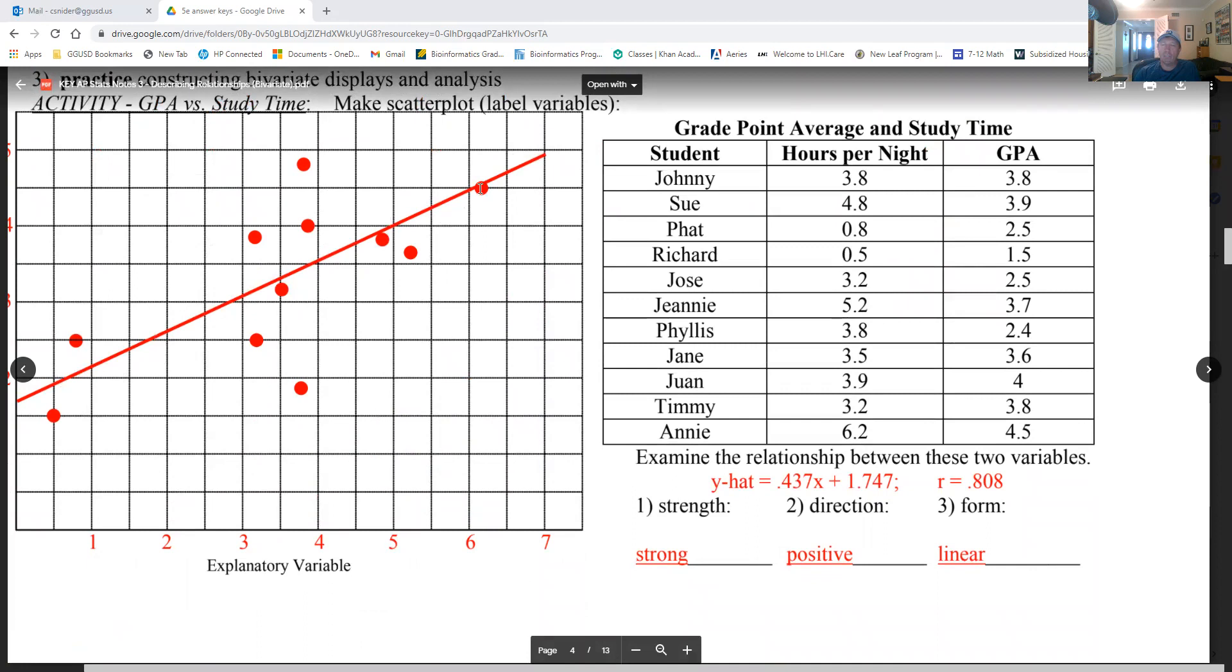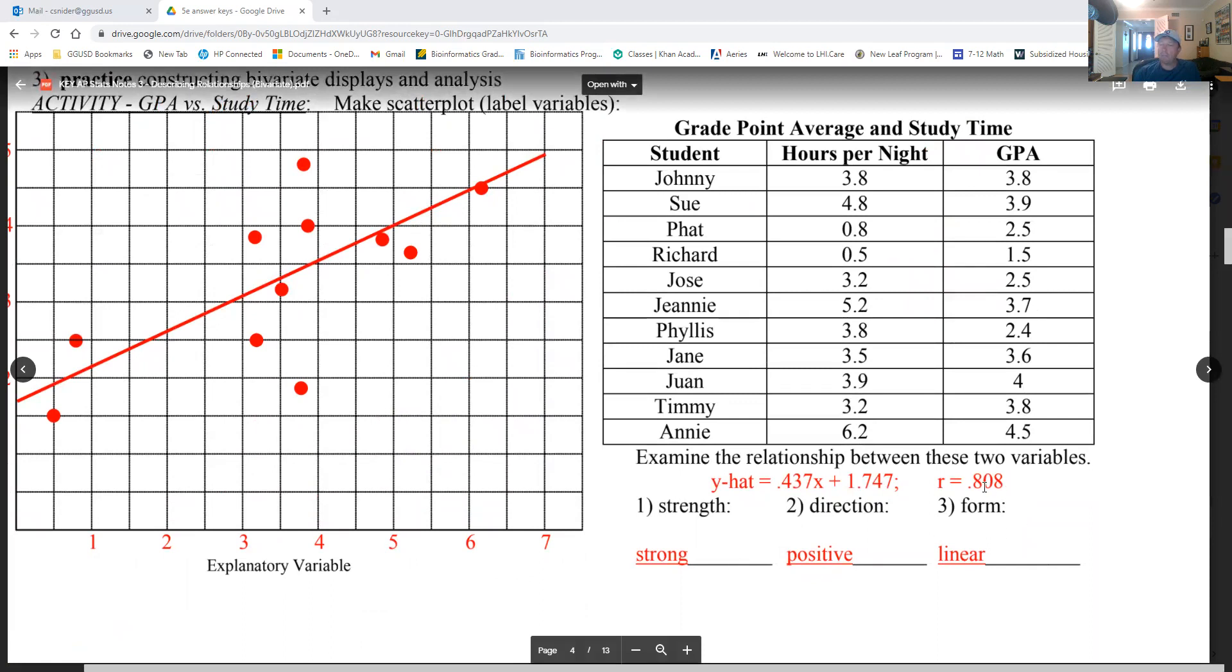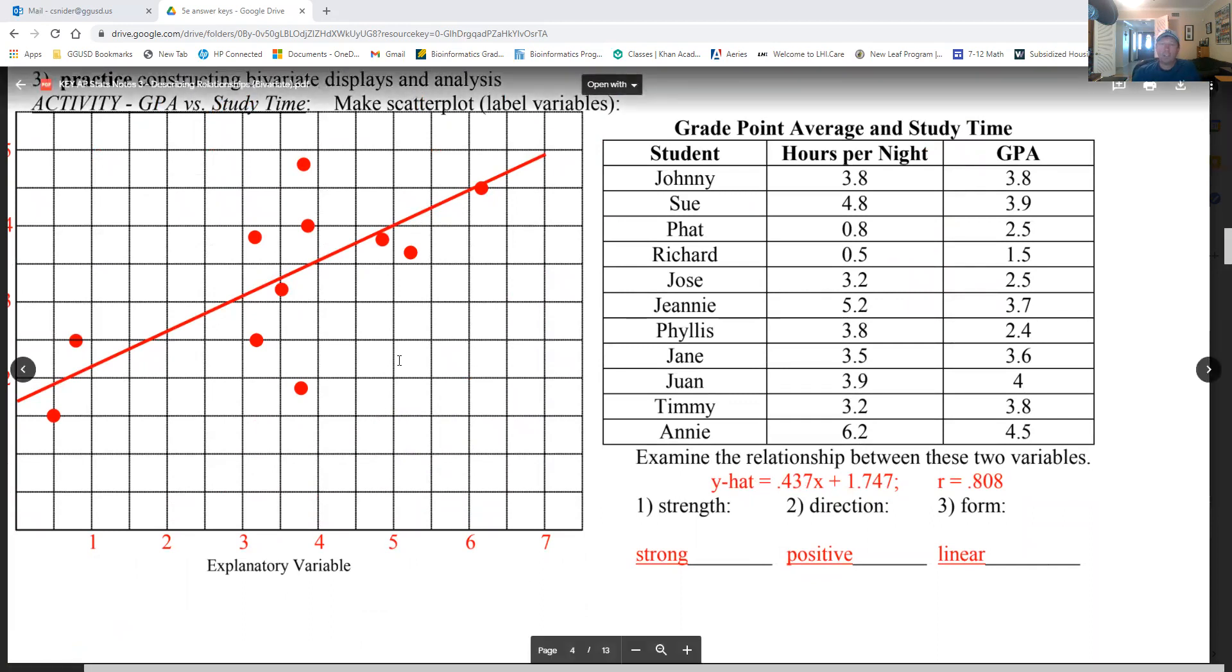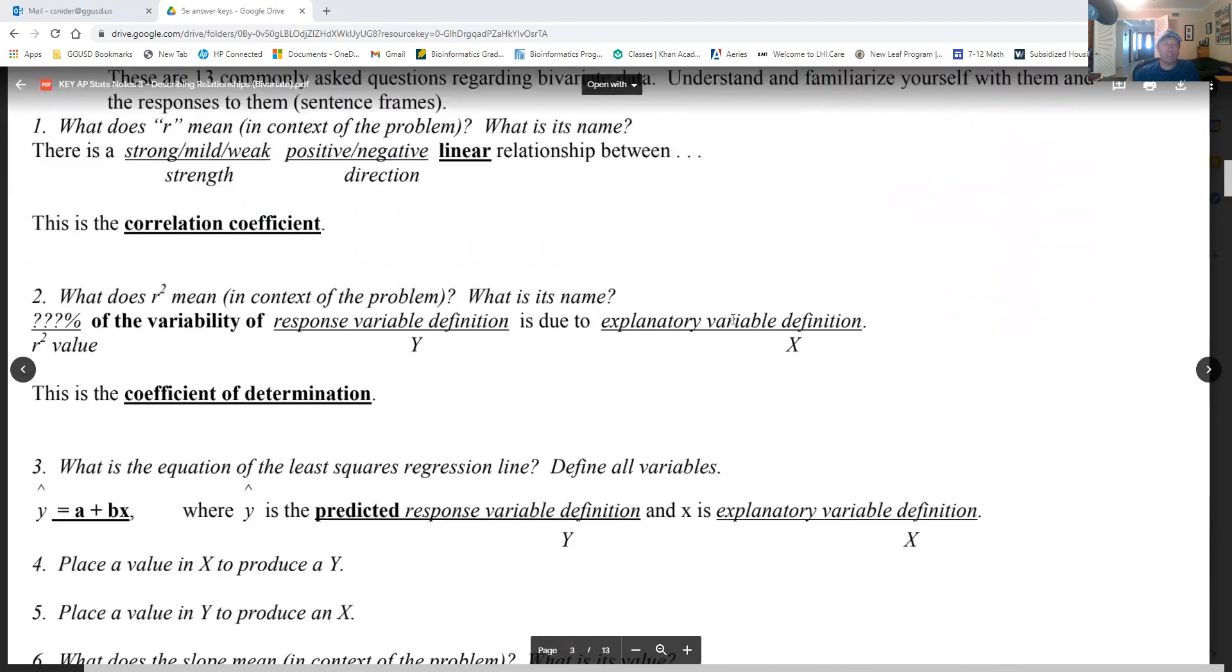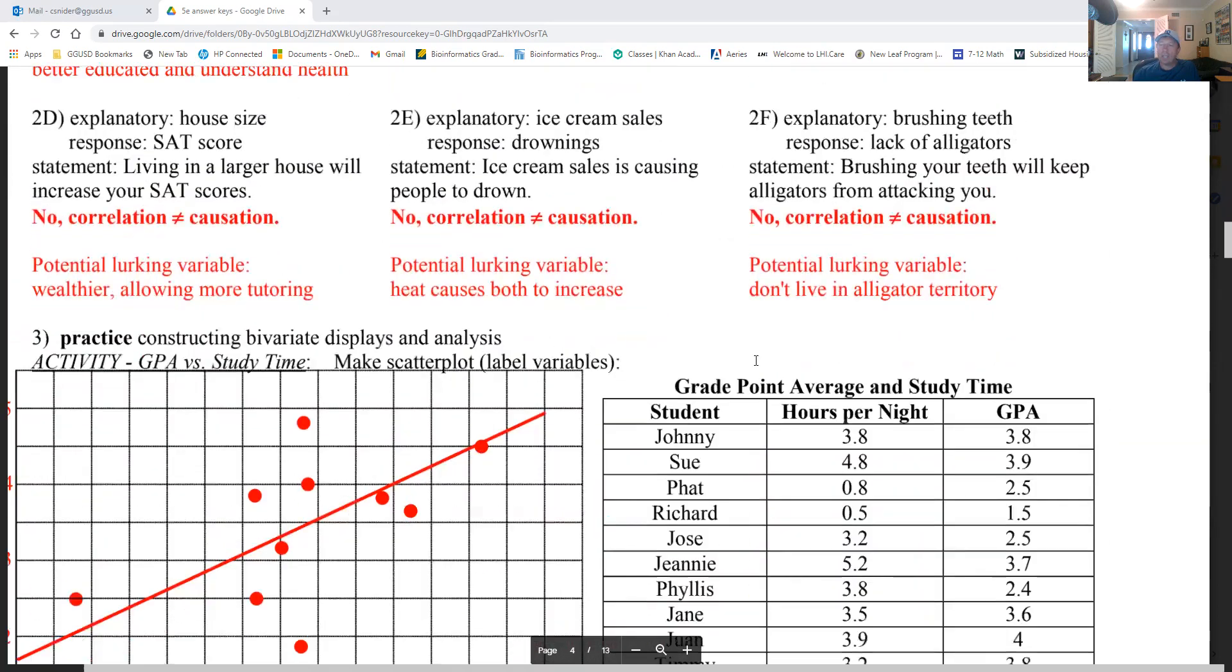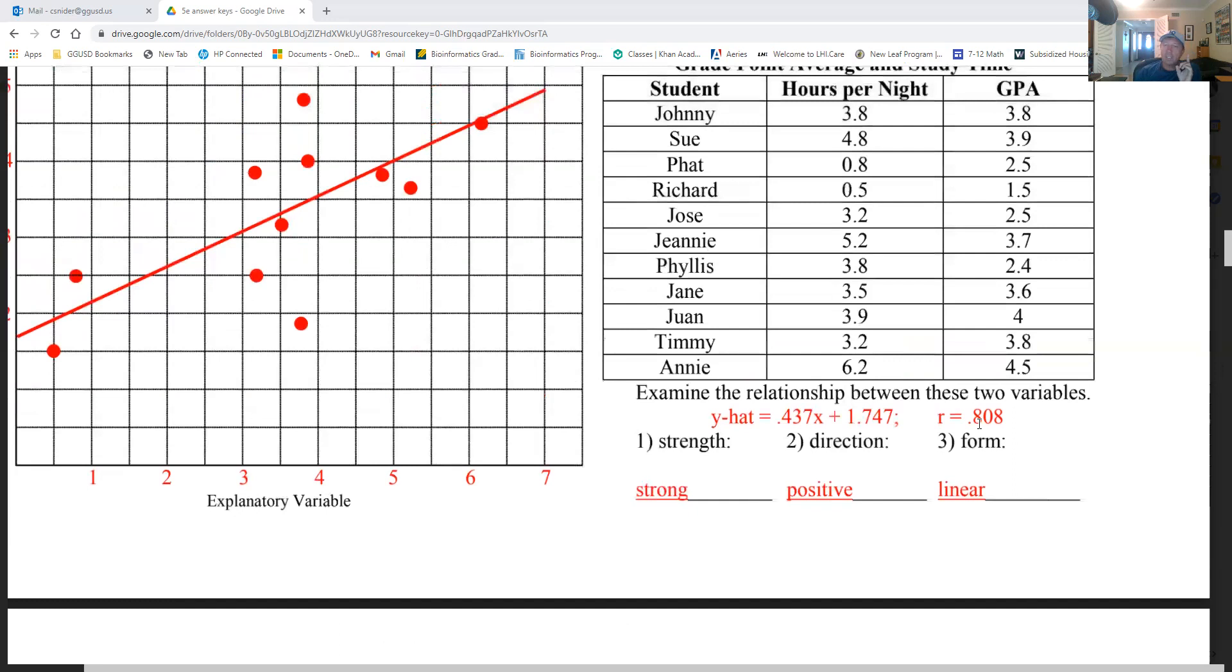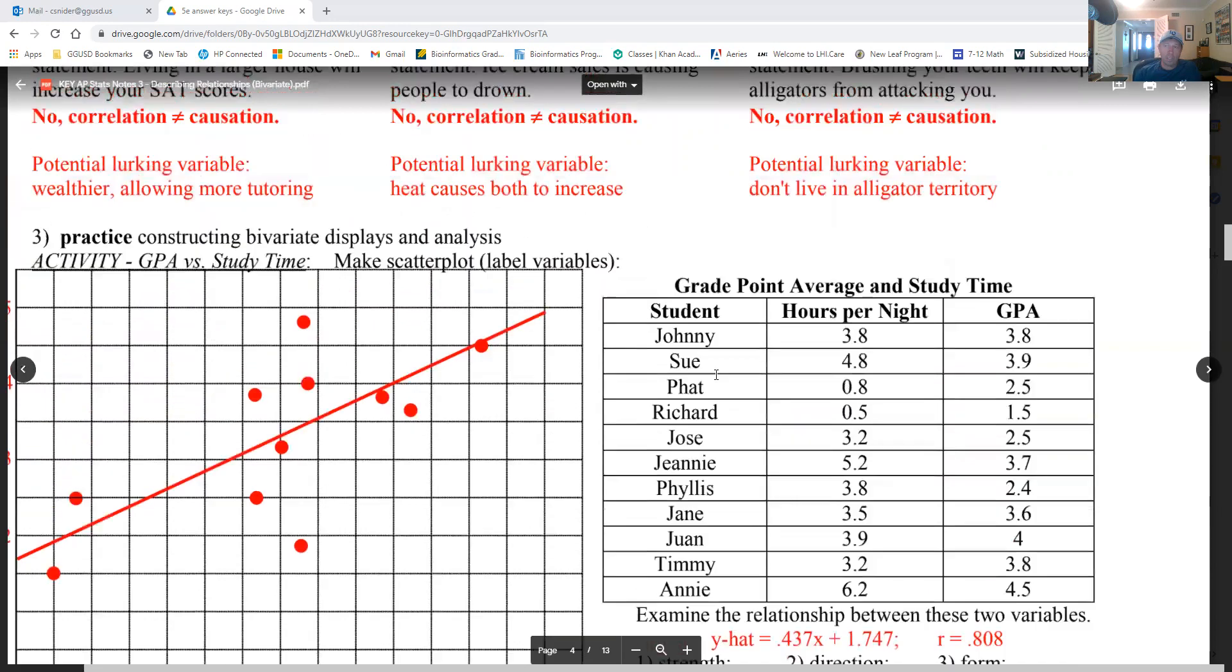All right, there is a little bit of a correlation here, right? A little link. GPA and study time. I just have fictitious names, they don't mean anything. Y hat equals 0.437, here are the numbers right here. Here's r, etc. The strength looks strong, it's above 0.8. The direction is positive, so it's going positive, and this course is linear. All right, now we're going to go through these 13 questions and see what we can do. 13 questions as best as we can. So the first one: I'll go back up and I'm going to slide back and forth now. Number one: what does r mean in context? What's its name? So r is right here. You got to write this down now, maybe on the back of your notes, maybe write it down. R is 0.808. There is a strong positive linear association between hours of study per night and GPA. That's it, that's what that means.